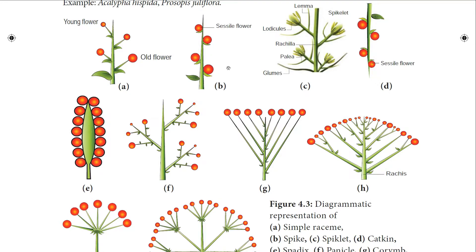The third type is spikelet, similar to spike but with a branched central axis. Sessile flowers are formed in acropetal succession. A pair of inflorescence bracts called glumes are present at the base of the inflorescence, and each sessile flower has a lemma (bract) and palea (bracteole). The tepals are reduced to colourless scale-like leaves, so petals and sepals are not visible. Each flower has only stamen and pistil.